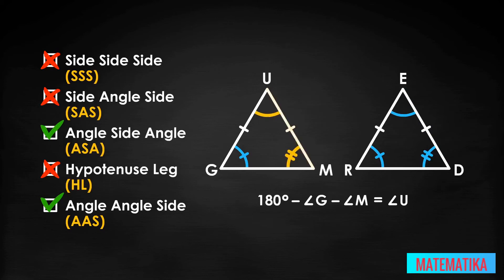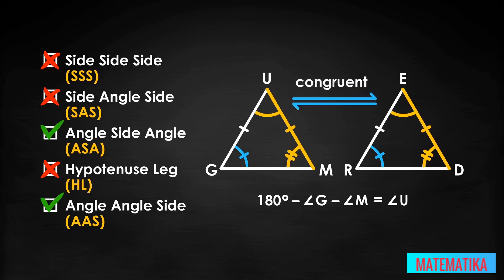If two angles and their included side of one triangle are all congruent to two corresponding angles and their included side of another triangle, the two triangles are congruent.